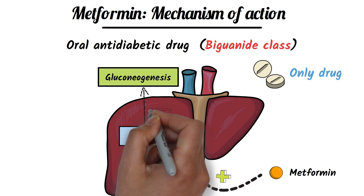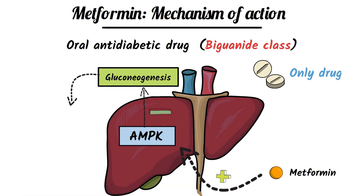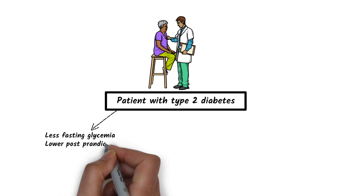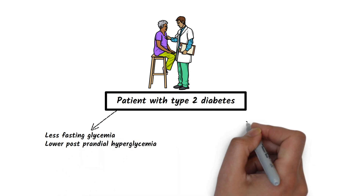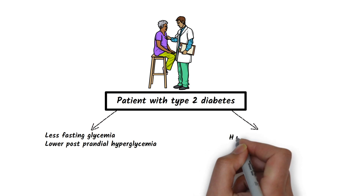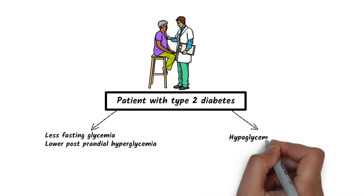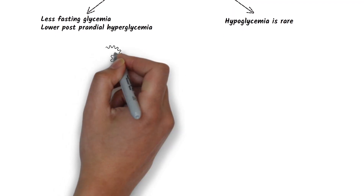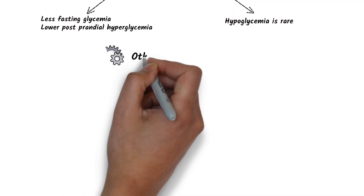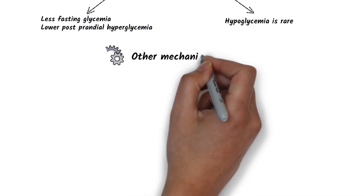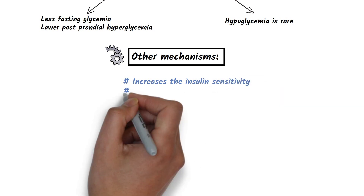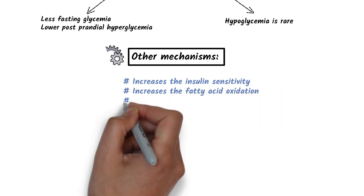The inhibition of gluconeogenesis leads to decreased glucose production. Patients with type 2 diabetes have considerably less fasting glycemia as well as lower post-prandial hyperglycemia after administration of metformin. Hypoglycemia is rare during metformin therapy, which is why it is more appropriately termed a euglycemic agent. Other mechanisms include increasing insulin sensitivity and increasing fatty acid oxidation.